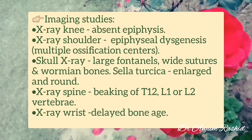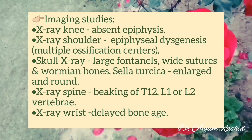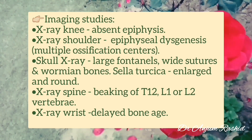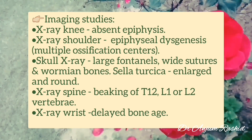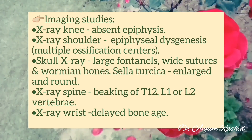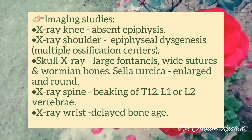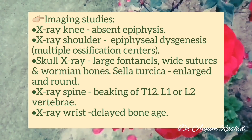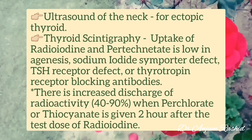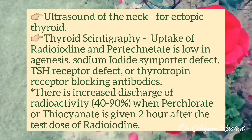Imaging studies: X-ray of the knees shows absent epiphysis. X-ray of the shoulder shows epiphyseal dysgenesis — that is, multiple ossification centers. Skull X-ray shows large fontanel, wide sutures, and Wormian bones. Sella turcica is enlarged and round. X-ray of the spine shows beaking of T12, L1, and L2 vertebrae. X-ray of the wrist measures delayed bone age.